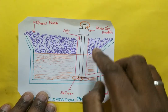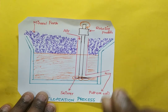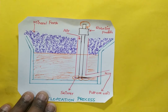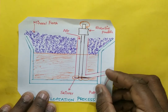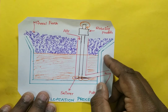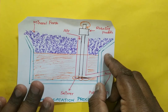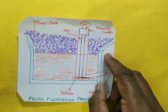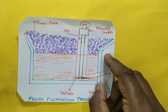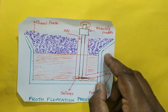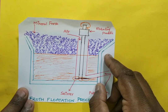At this stage we obtain only crude metal, not pure metal. This process simply increases the concentration of metallic particles in the ore — that is why it is called the concentration of ores.